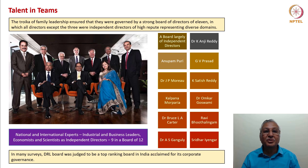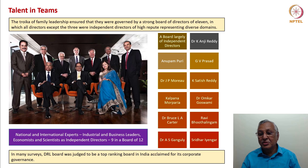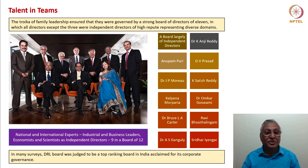Broadly, the organization structure at high level was: Dr. K. Anji Reddy as Founder and Chairman, with G.V. Prasad as CEO and K. Satish Reddy as COO. The trioka of family leadership ensured they were governed by a strong board of directors of eleven, in which all directors except the three family members were independent directors of high repute representing diverse domains. Dr. Anji Reddy, G.V. Prasad, and Satish Reddy were the full-time directors. The board included independent directors such as Anupam Puri, Dr. J.P. Moreau, Kalpana Morparia, Dr. Onkar Goswami, Dr. Bruce Carter, Ravi Bhoothalingam, Dr. Ganguli, and Sridhar.